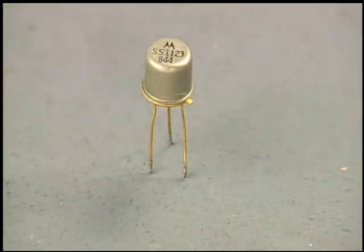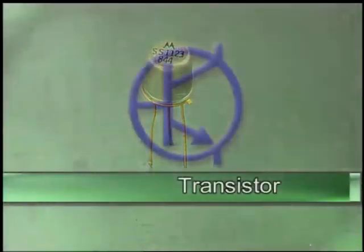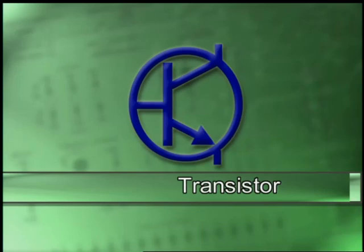A transistor is an electrical switch that allows the flow of current through a circuit in one direction as a control current is applied to the base. The symbol for a transistor is a perpendicular line that has a line on one side representing the base and a V-shaped line pointed to the perpendicular on the other side. An arrow on one side of the V indicates the direction of current flow when the control current is applied to the base.